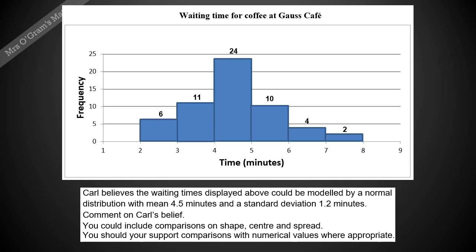We're going to do it for this question here where Carl is running this cafe and he's measured the time in minutes it takes to make cups of coffee and recorded how many were made within each time interval. For example, you've got six here that were made in an interval of two to three minutes.